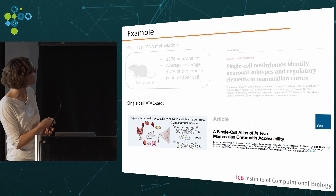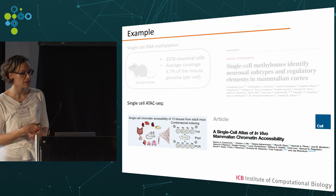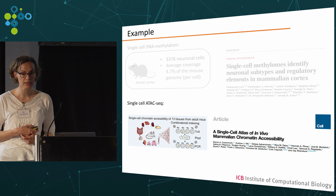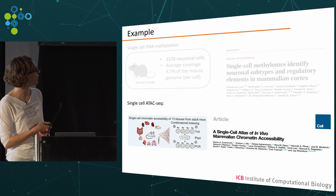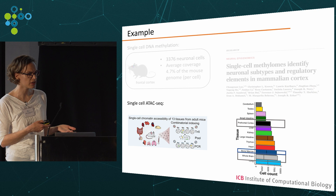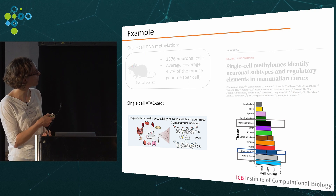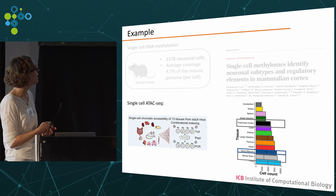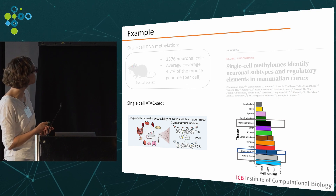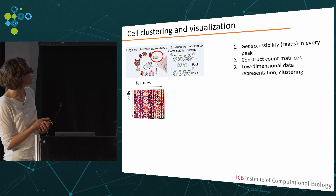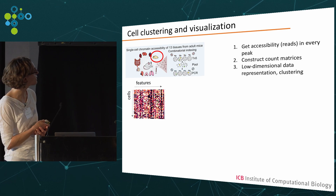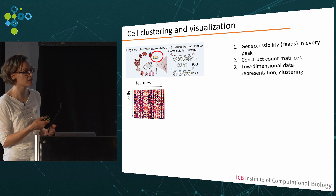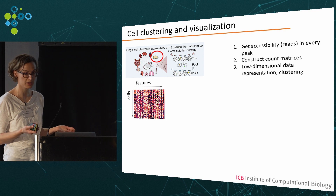We also looked at an example of single cell ATAC-seq data from the Cusanovic et al. atlas paper published last year, in which they profiled 13 different tissues. We first looked at the brain for comparison with the DNA methylation atlas, and then also at bone marrow data. The workflow is the same: we get accessibility reads per peak, construct count matrices, and then do low dimensional data representation and clustering.